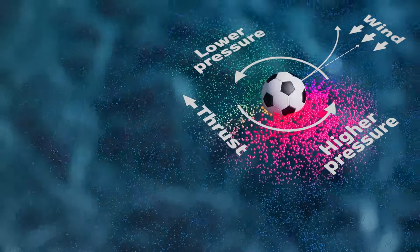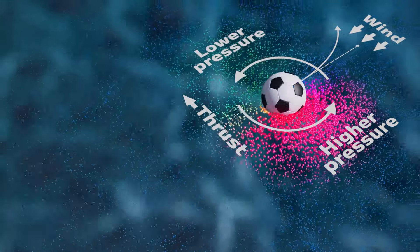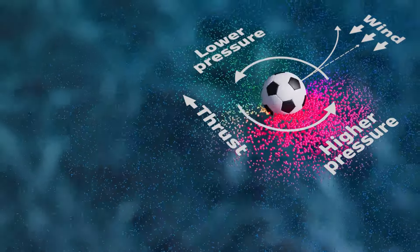A spinning ball compresses air on one side and thins it on the other. The pressure difference causes a powerful thrust that curves the path.